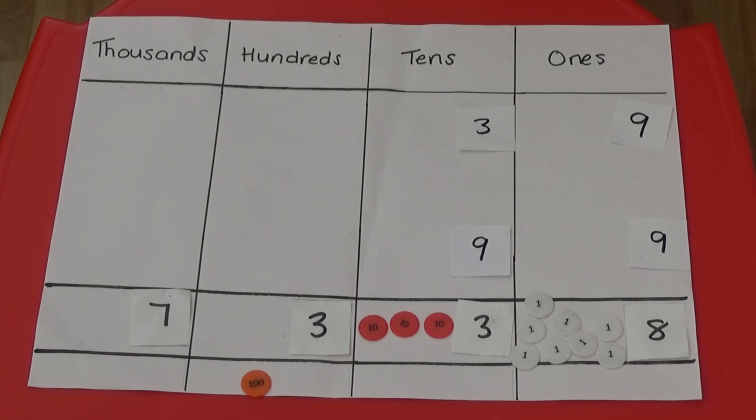Next I need to add the 100s. They also need to add to 13 100s. So I'm going to use 3 and 9 again.